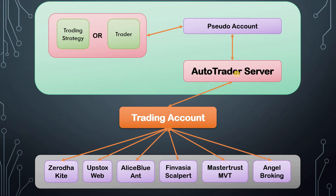AutoTrader server looks up in its settings and finds a mapping to that pseudo account — specifically, which is the actual trading account to which this pseudo account maps. Once it finds the trading account, it looks at which broker that account belongs to, or more precisely, which trading platform that account is using. Based on the trading platform, AutoTrader server will load the appropriate module — it could be Kite, Upstox, Alice Blue, Ant, and so on — and the order will be sent to the appropriate trading terminal or stock broker.